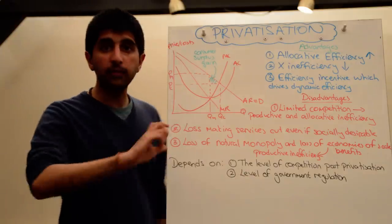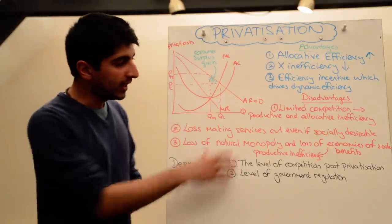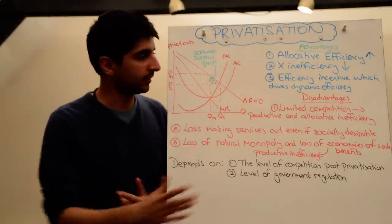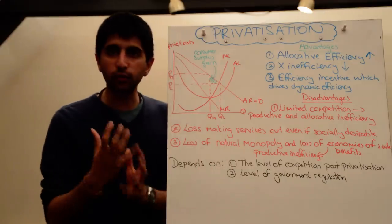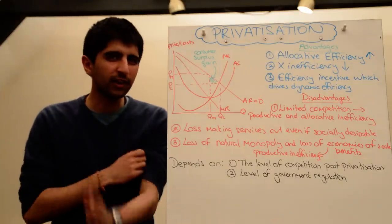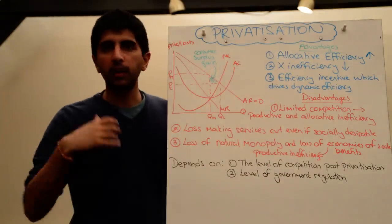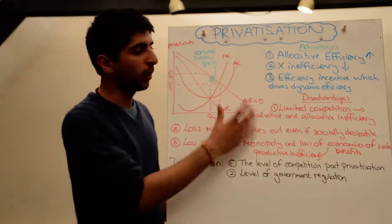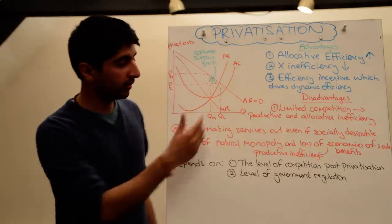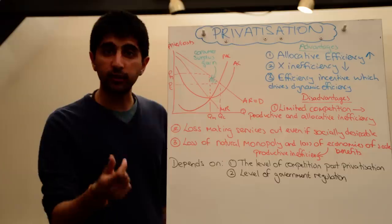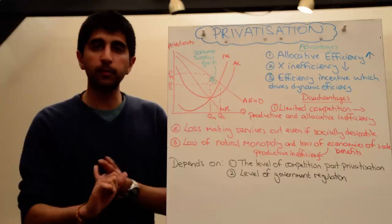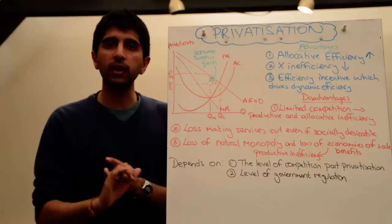It depends also on the level of government regulation. One of the key risks here is if there is limited competition, you might see local monopolies, you might see oligopolies that exist. If government regulation is tight, if it is strong, chances are you are going to see more competitive outcomes. Whereas, if government regulation isn't so strong, if it is weak, you might see the existence of monopolies and oligopolies post-privatisation.